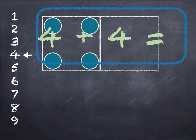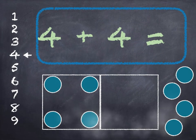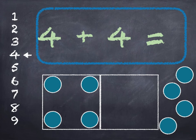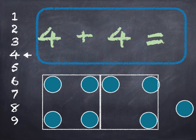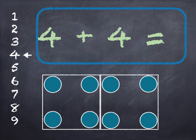4 plus 4. 4 in the box and we'll add 4 on. 4, 5, 6, 7, 8. And if we check that on the number line we start at 4, we count 4 down. 1, 2, 3, 4 and we end up at 8. So 4 plus 4 is 8.